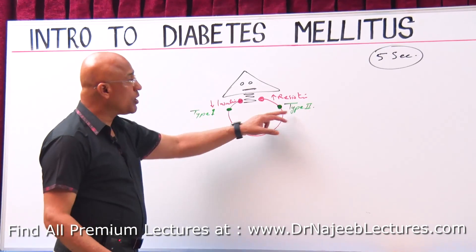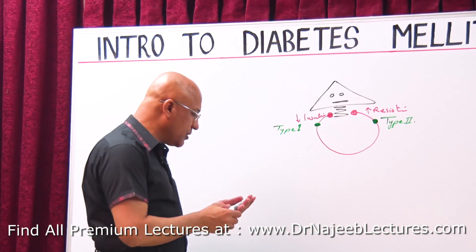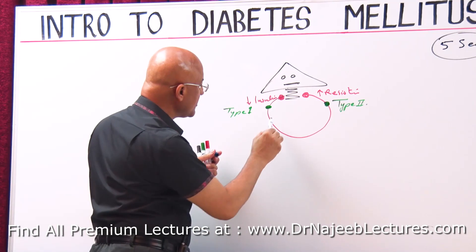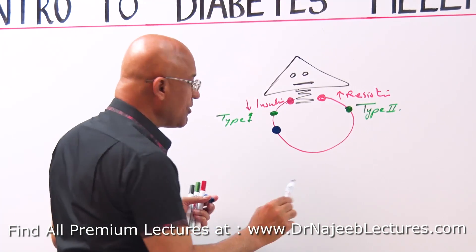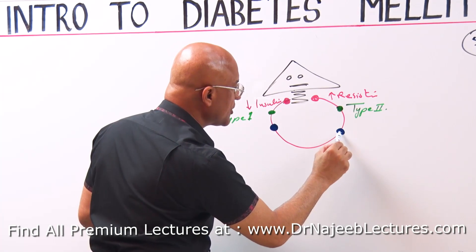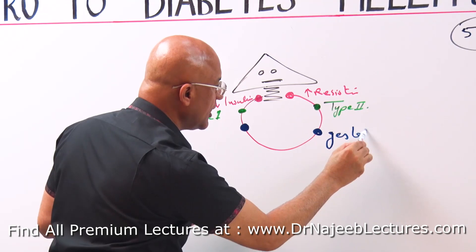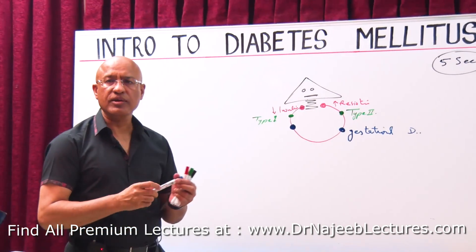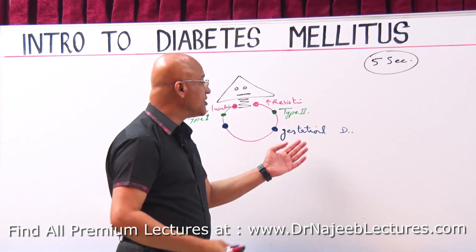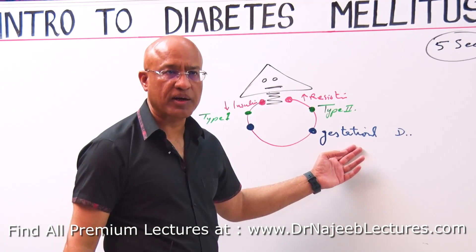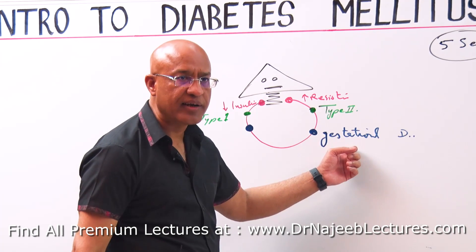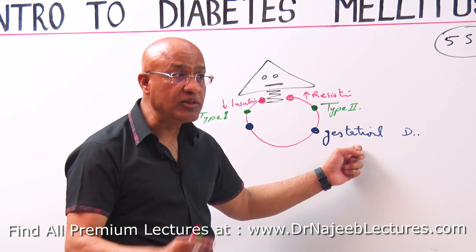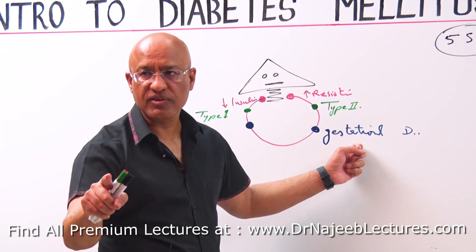There are more types beyond Type 1 and Type 2. For example, gestational diabetes mellitus — this is a condition in which during pregnancy there is a tendency for hyperglycemia. In gestational diabetes there is a problem in production of insulin as well as peripheral resistance, where tissues are not responding well to insulin.